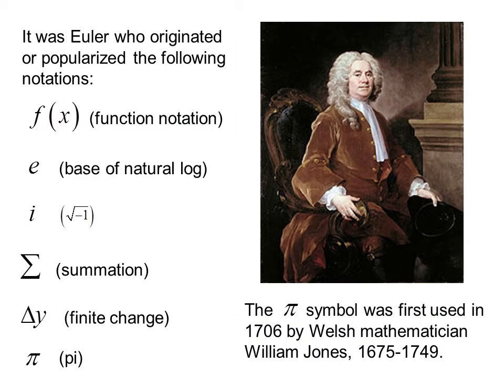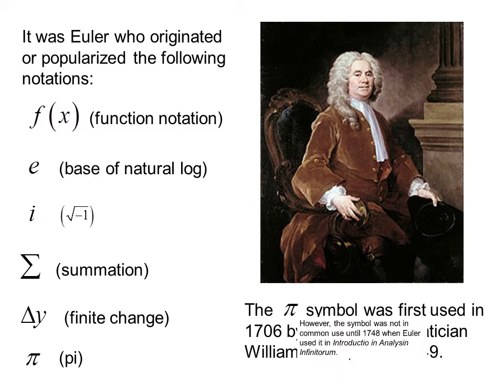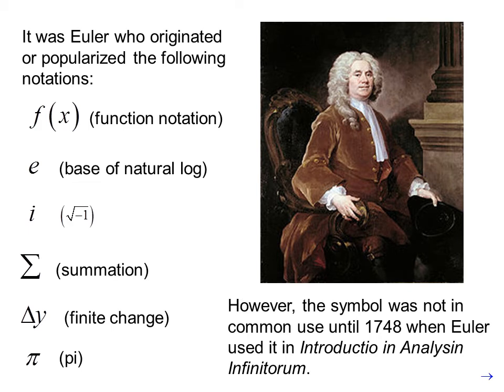The pi symbol was first used in 1706 by Welsh mathematician William Jones who lived from 1675 to 1749. However, the symbol was not in common use until 1748 when Euler used it in Introductio in Analysin Infinitorum.